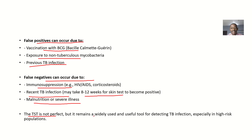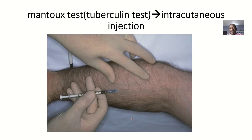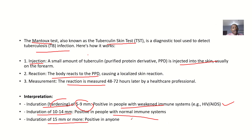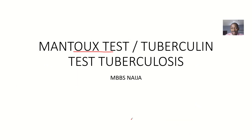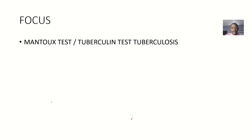The tuberculosis skin test is not perfect, but it remains a widely used and useful tool for detecting tuberculosis infection, especially in populations that are at high risk. So many people come into the lab and you don't really have time for all the other tests — you just give them the tuberculin injection and have them come back after two days. That's it about the Mantoux test, also known as the tuberculin skin test for tuberculosis.